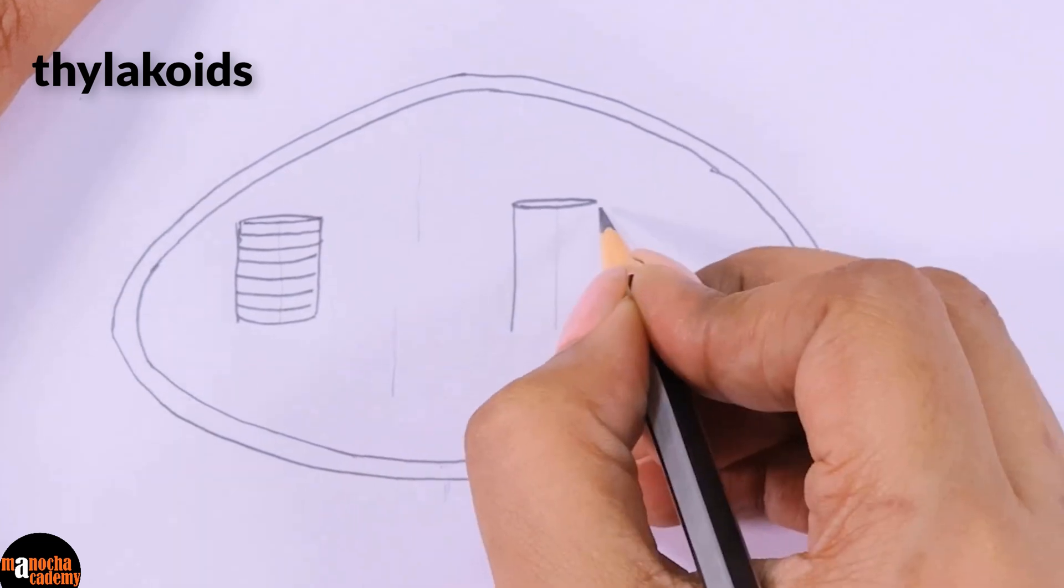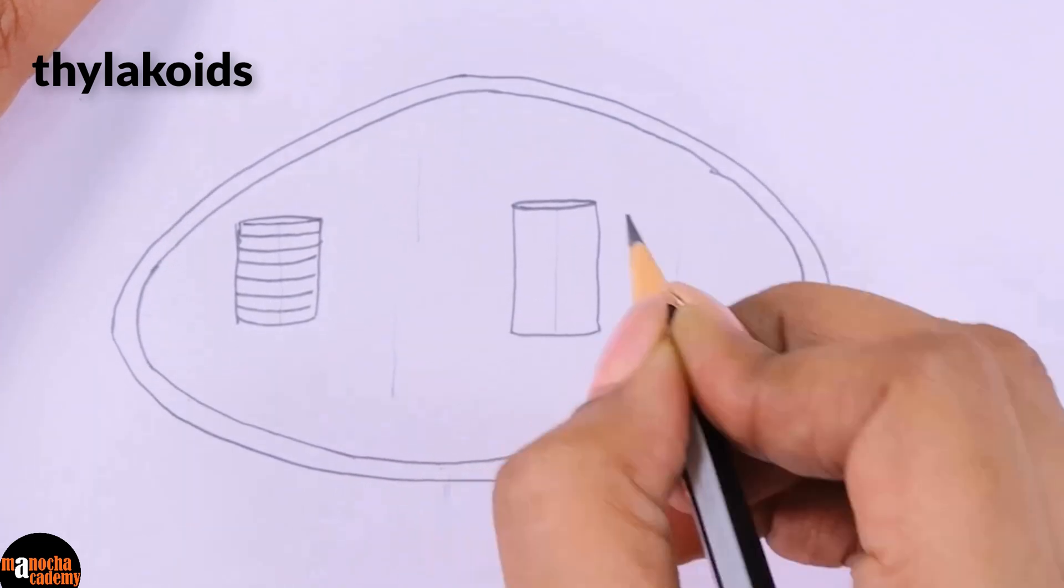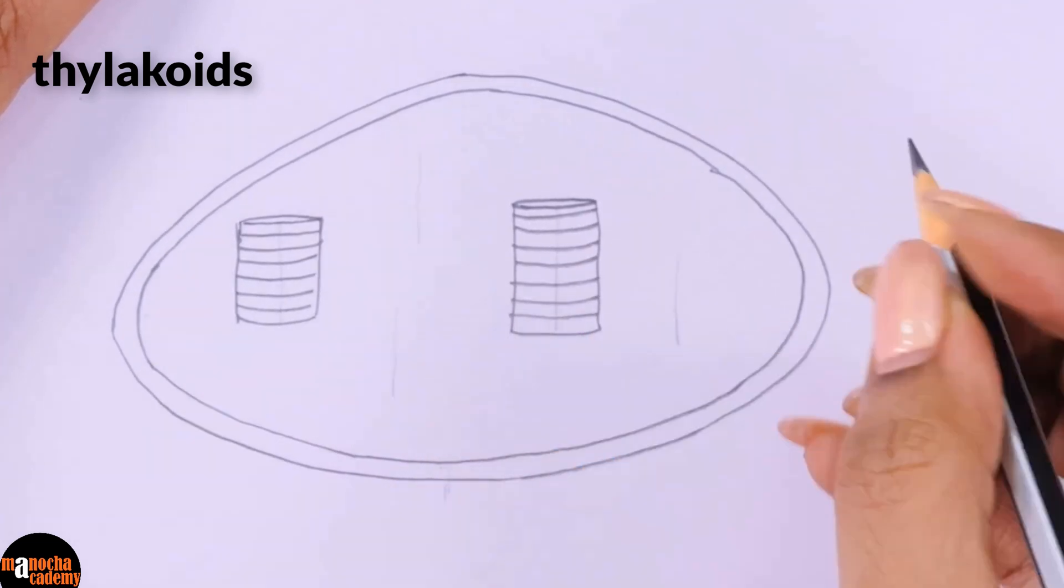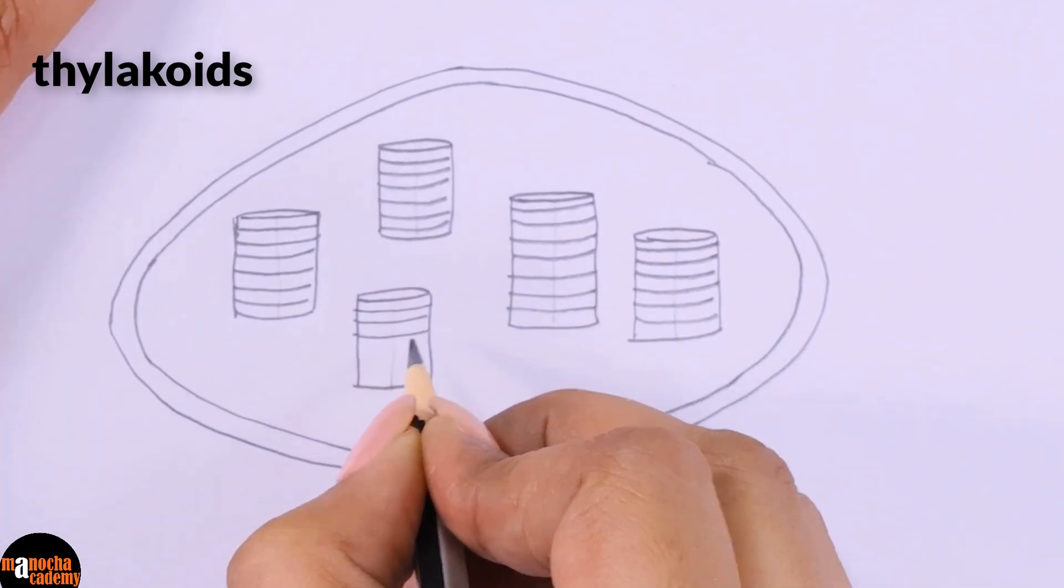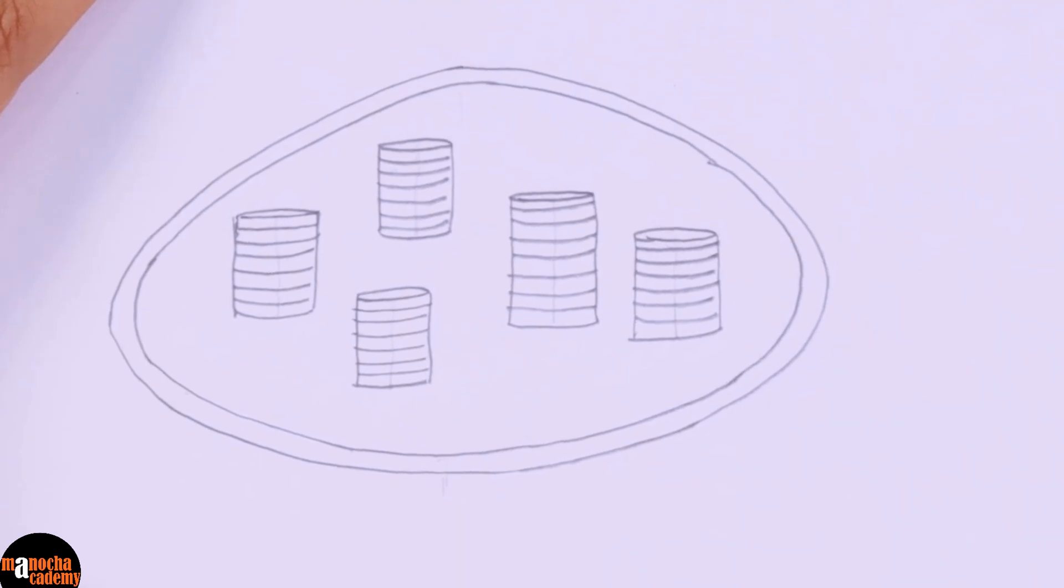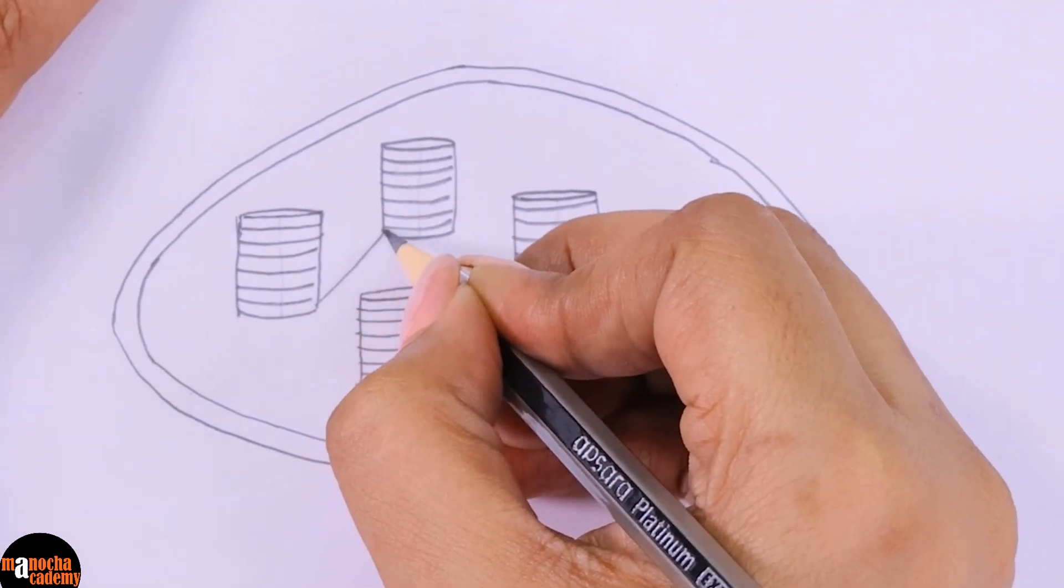Again let me repeat that this is a very diagrammatic presentation. This is not exactly how the thylakoids and the grana look. Now that we have finished drawing the thylakoids and the grana.